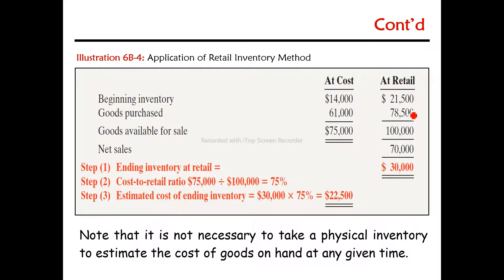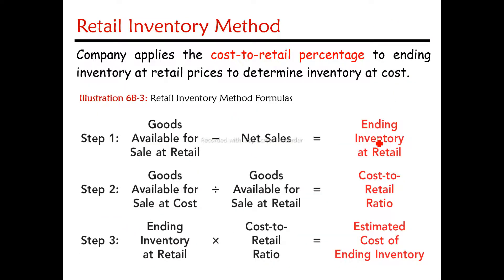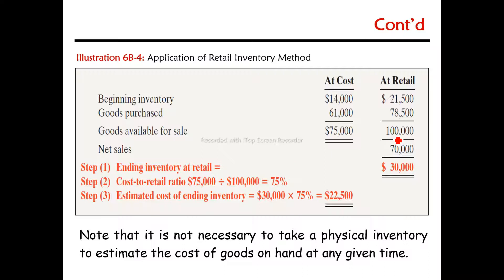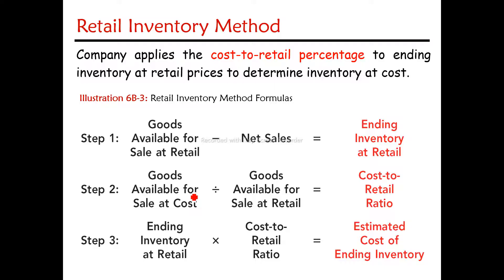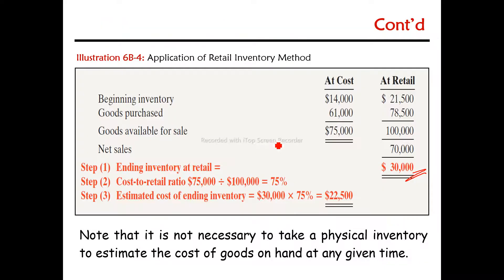Goods purchased are recorded at both cost and retail. Goods available for sale are then totaled at both cost and retail. Step 1: find the cost-to-retail percentage using cost of goods available for sale divided by retail value of goods available for sale.